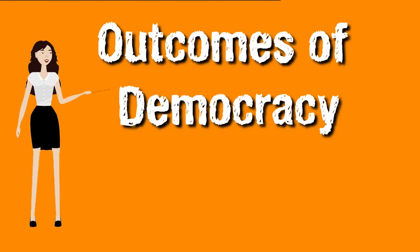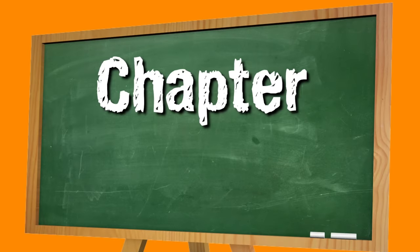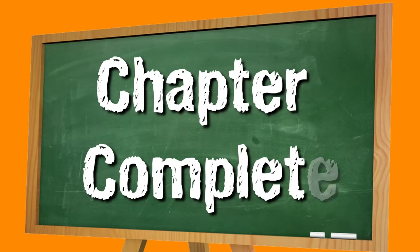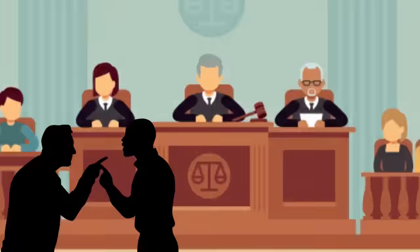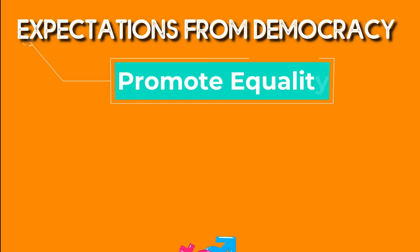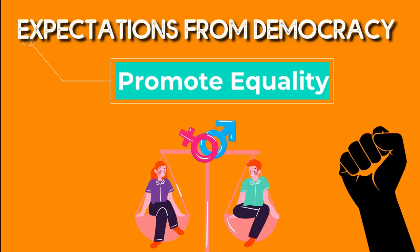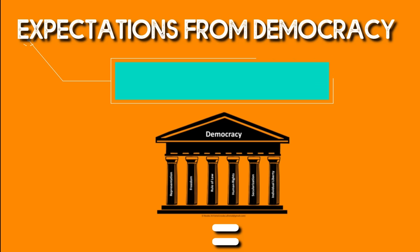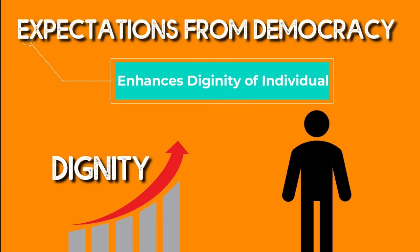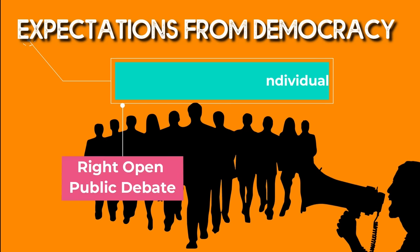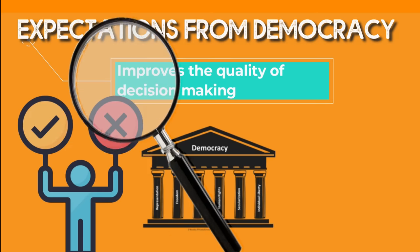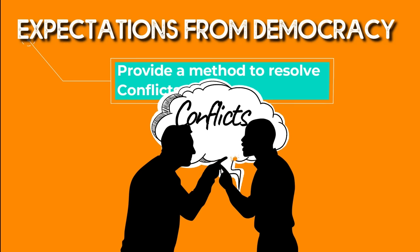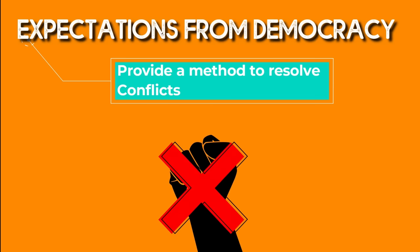These were the democratic outcomes. Now we have completed this chapter. Let's summarize what we have done. This chapter tells us that we have some expectations from democracy — that there should be equality, people's dignity should be maintained, government decisions should be efficient, and there should be economic development.